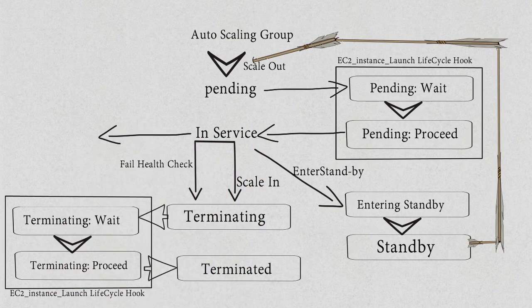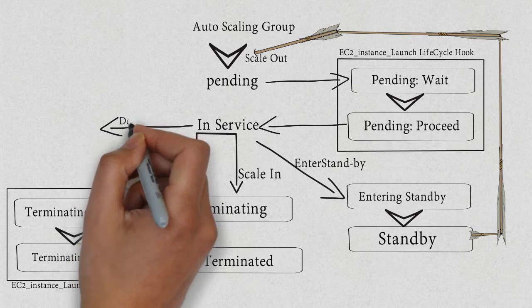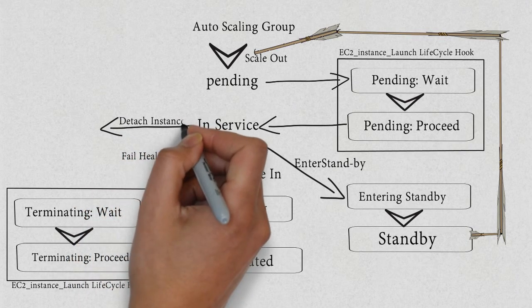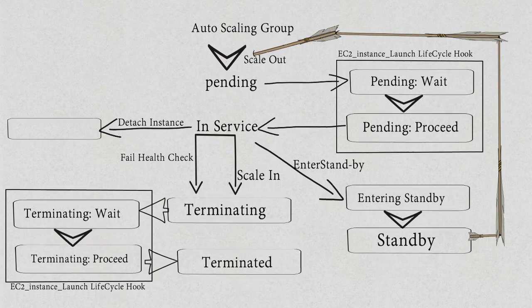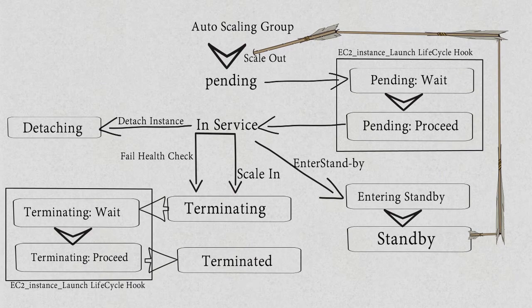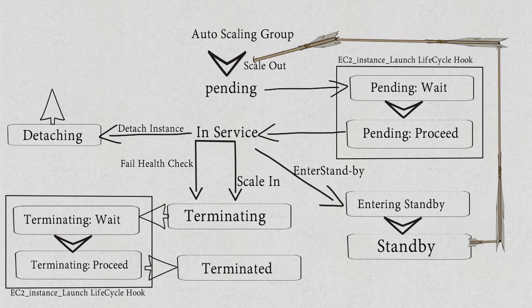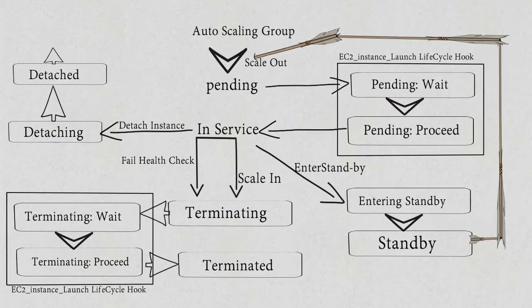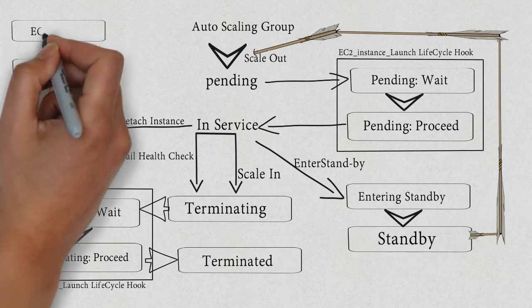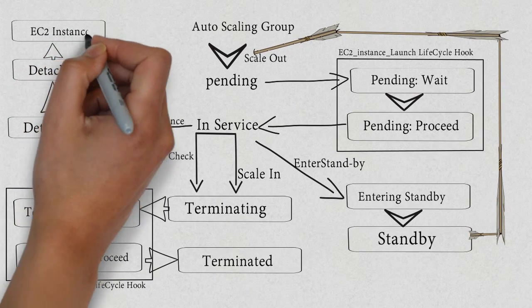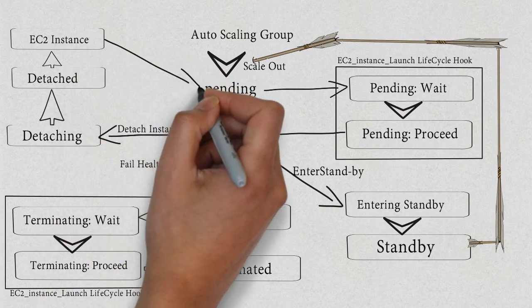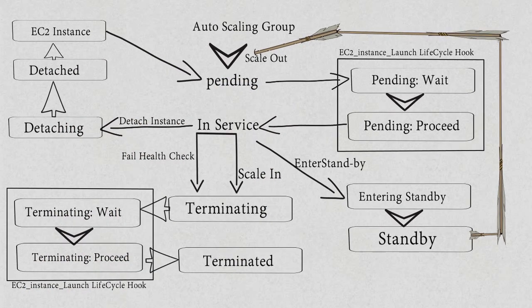In the standby stage, the EC2 instance will be in service but you won't receive any traffic until you put the EC2 instance back into in-service mode. Next is detached instance: once you are done with your work, you can detach the EC2 instance and reuse the same EC2 instance with your autoscaling. So this is the full circle for the autoscaling group.